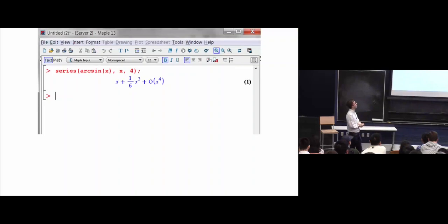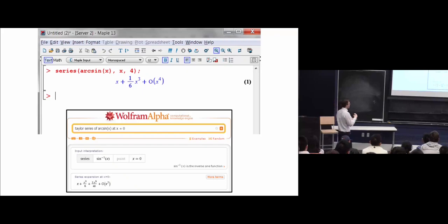So, you know, if you need to know this, you just crack open the software. This is Maple. You type series arcsin x 4 and it just tells you the answer. Like, there you go. Or like in WolframAlpha, I know you all know about WolframAlpha, you can just type it in English and it'll tell you the answer.